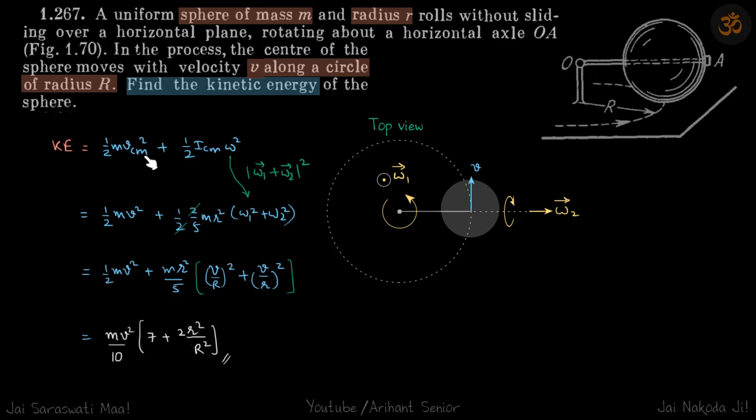We know kinetic energy is given by 1/2 m v_cm² + 1/2 I_cm ω². Now omega is a vector, and what we write here is the magnitude of the final omega.